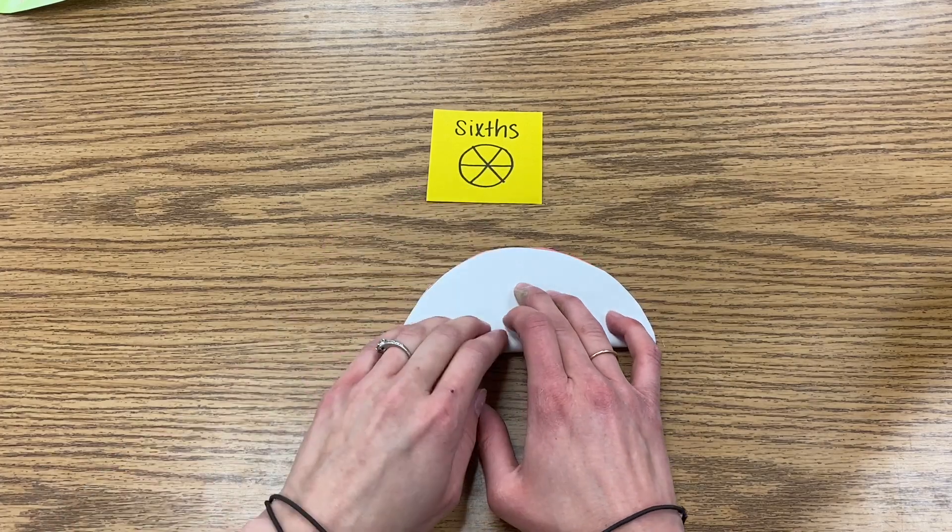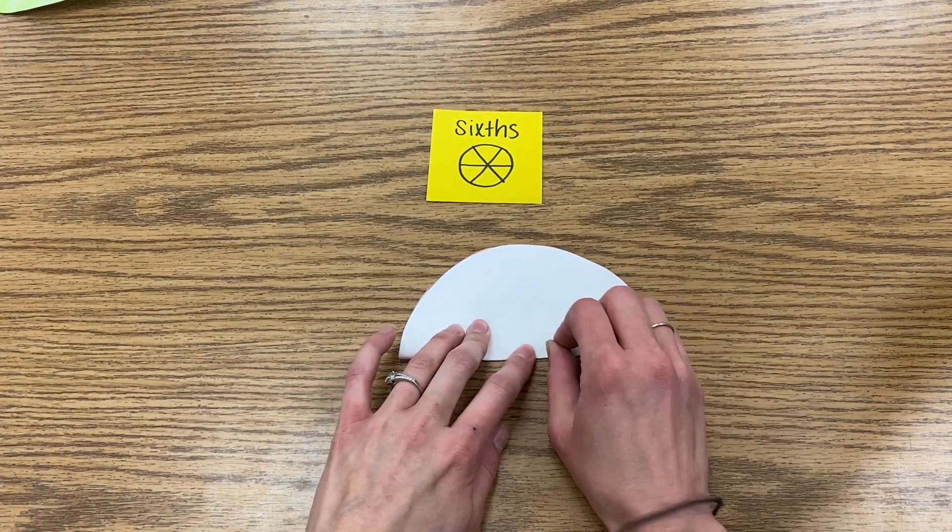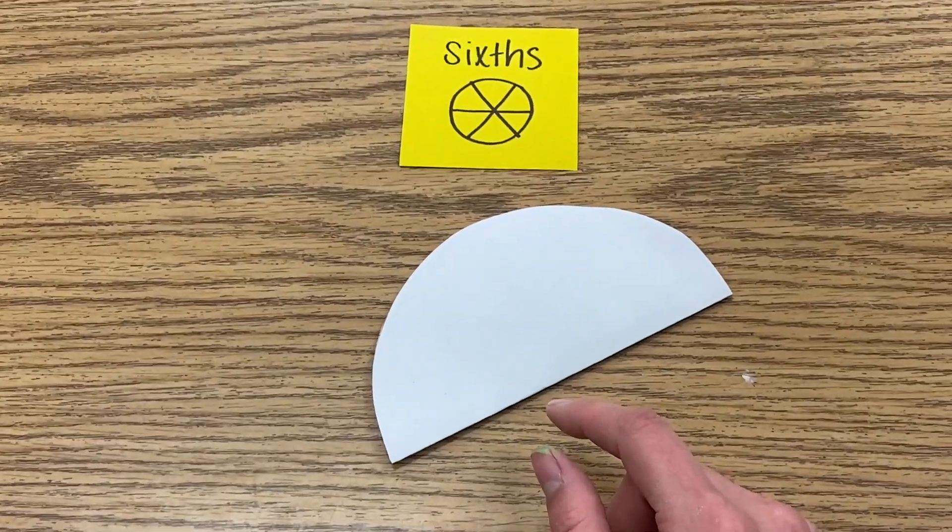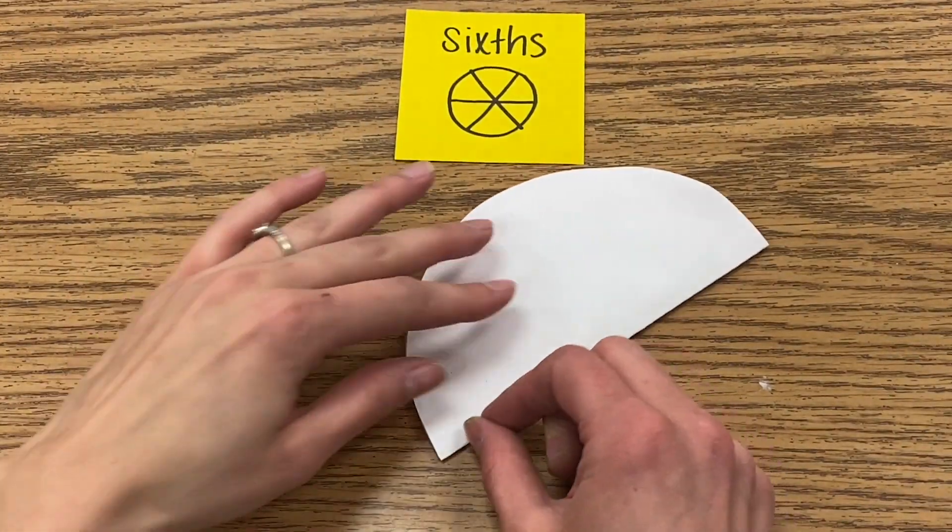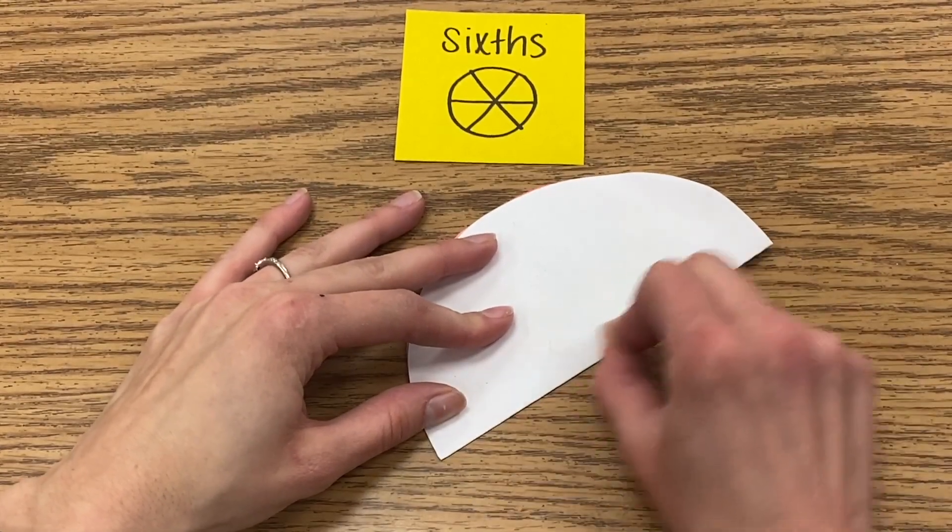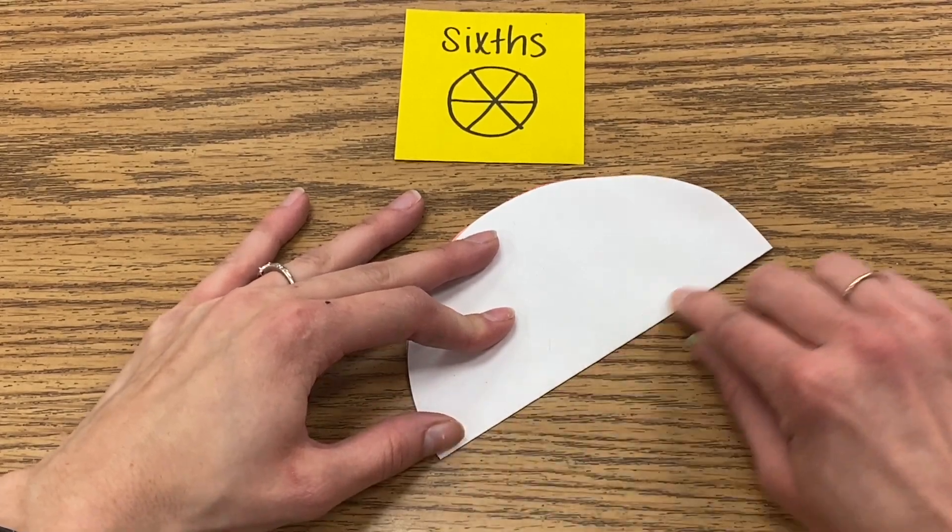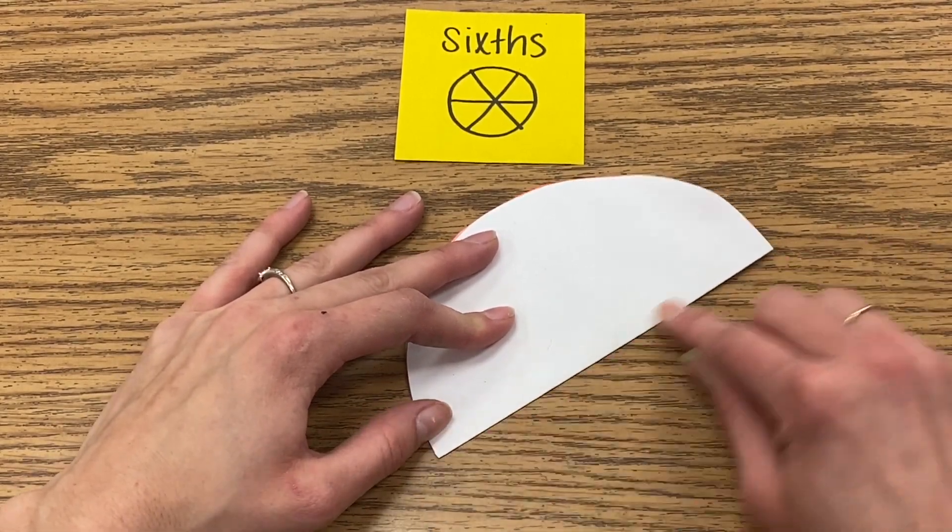To start with sixths you're going to fold it in half so it looks like a semicircle. With this project it's going to be extremely important that you crease or smooth your fold very well to make the cutting part easier. Take the back of my thumbnail and really smooth out that fold so it's nice and crisp.